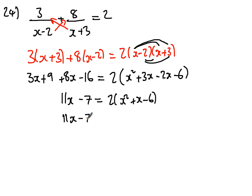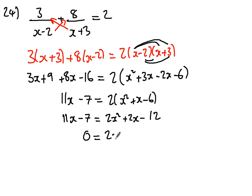Collecting x's together gives 11x; 9 take away 16 is minus 7. On the right side: 2x² with the x's together gives just 1x, minus 6. Multiplying by 2 gives 2x² + 2x − 12. Taking all numbers to the other side to form a quadratic: taking 11x gives 9x, and adding 7 to minus 12 gives minus 5, so 2x² − 9x − 5 = 0.